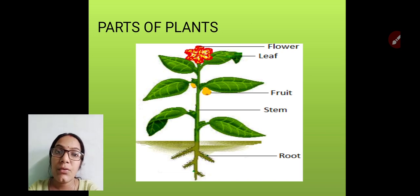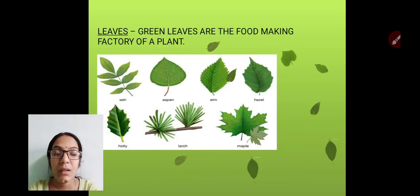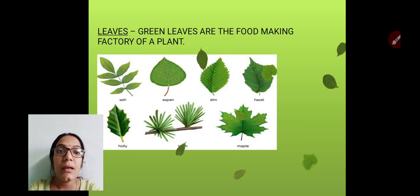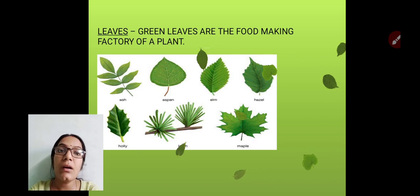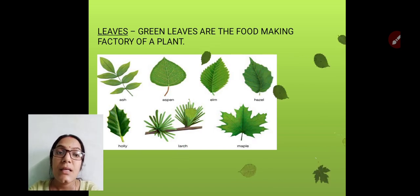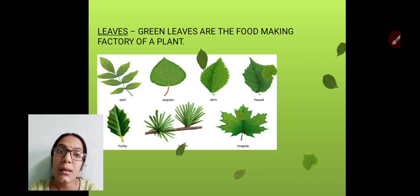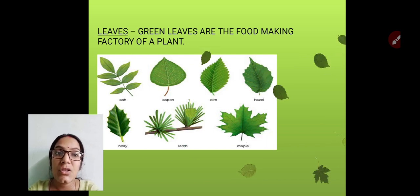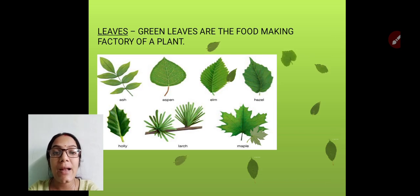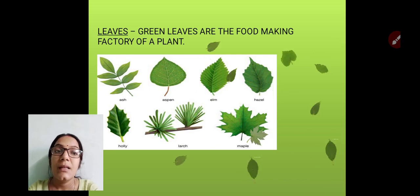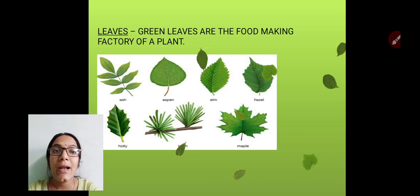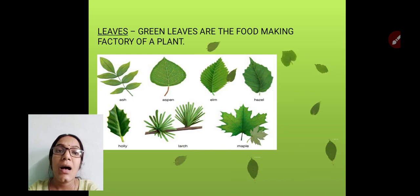Today we will study about flower, leaf, fruit, seeds, and their functions. So let us begin. Leaves are usually green in color and they are called the food-making factory of the plant, or the kitchen of the plant. Leaves are of different shapes and sizes — your peepal tree has a different shape of leaves, your mango tree has a different shape, and you can find different shapes of leaves in the trees around your house.